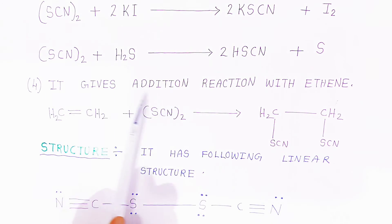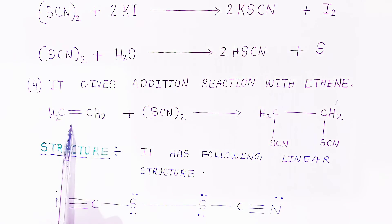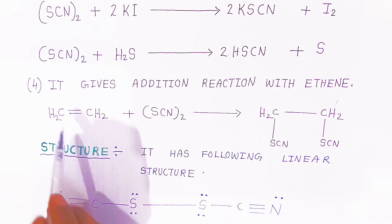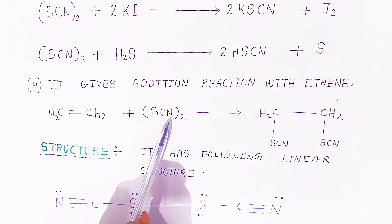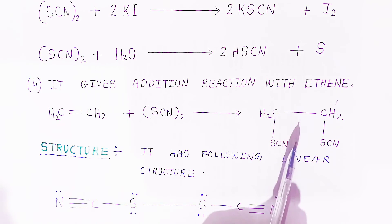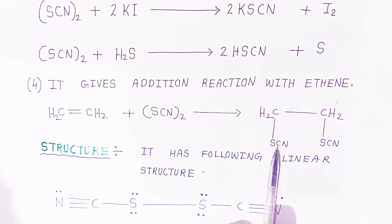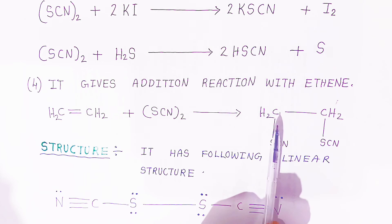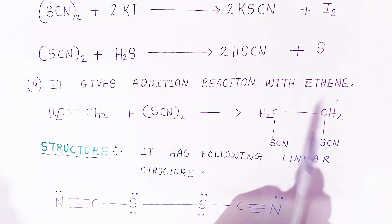Thiocyanogen gives an addition reaction with ethene. When ethene reacts with thiocyanogen, the double bond becomes a single bond and you get 1,2-dithiocyanoethane.